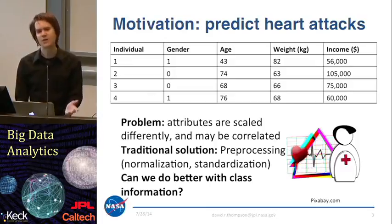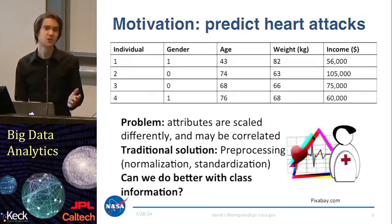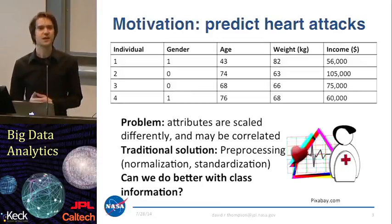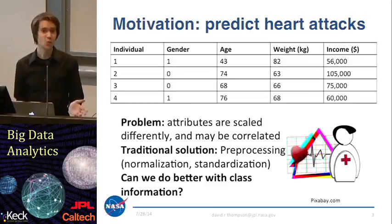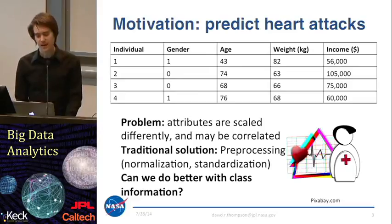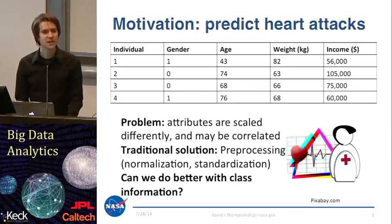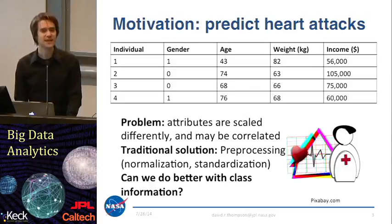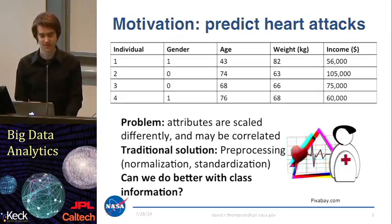A traditional solution to resolving this might be to apply some sort of pre-processing strategy. We can do normalization, maybe standardize things so they have mean zero and standard deviation one. That's a fairly common approach. But the intuition behind metric learning is that maybe if we incorporate some class information from our training set, we can do even better and define distances in this space that are actually more relevant to the task at hand than we would if we simply relied on intrinsic properties of the data itself.